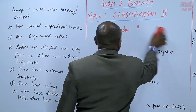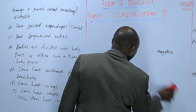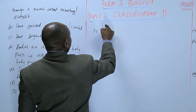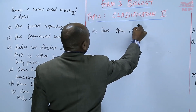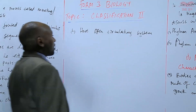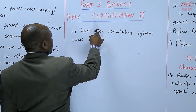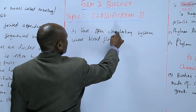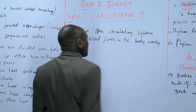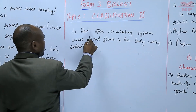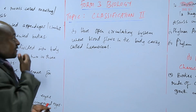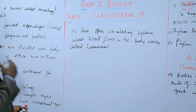In terms of other characteristics, they have what we call an open circulatory system, where blood flows in the body cavity called the haemocoel. They have an open circulatory system where blood flows in the body cavity that is called the haemocoel.